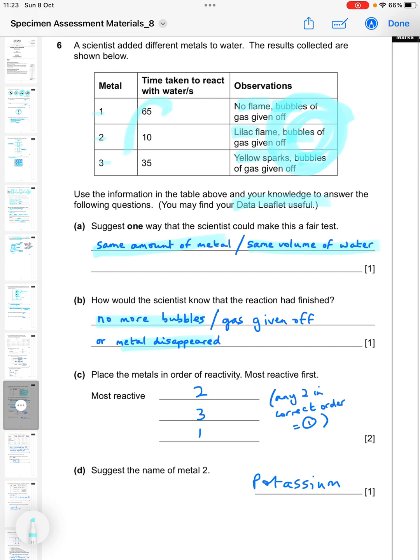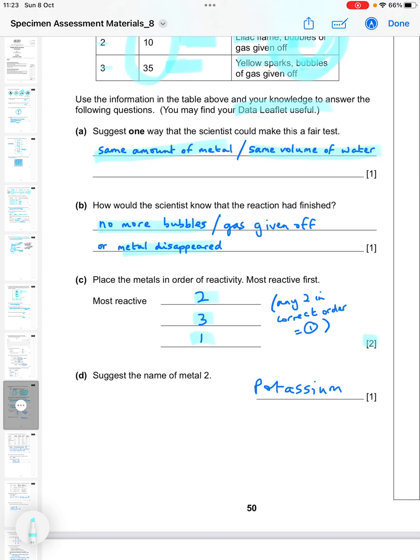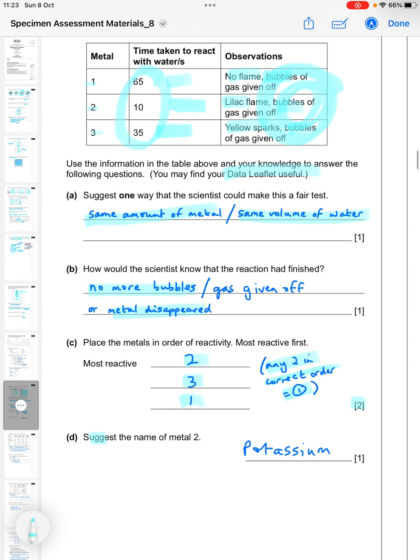Suggest the name of metal two. The clue is up here, it's a lilac flame, so you would suggest that it's potassium.